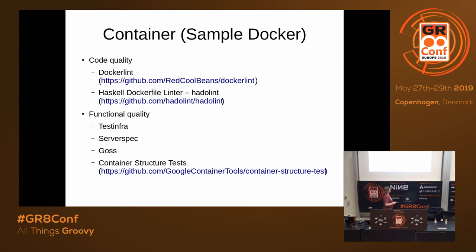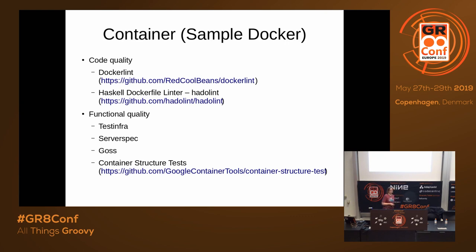Now let's look at containers. Again, two topics: code quality and functional quality. For code quality there are two linters: DockerLint and the Haskell Dockerfile Linter (Hadolint). In my opinion, Hadolint is the better one — and yes, it's written in Haskell. For functional quality, you can reuse libraries like TestInfra, ServerSpec, or Goss, using Docker images as if they were virtual machines, to ensure a specific structure exists inside your Docker container.